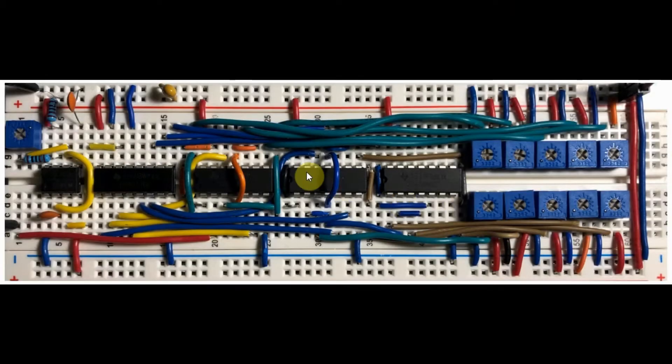Let's have a look at the components used in this project. We have a 555 timer that will generate a clock signal at a few kilohertz. The frequency of the clock can be controlled by this pot.